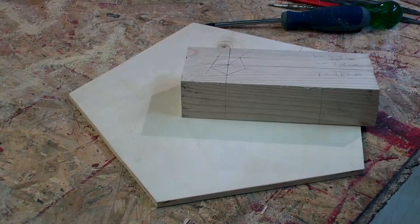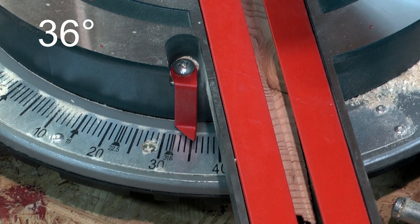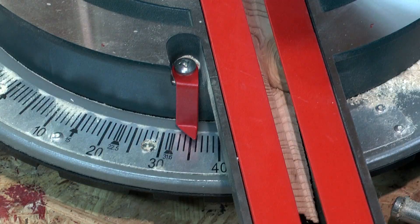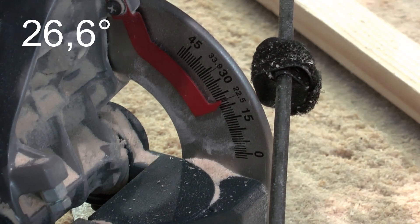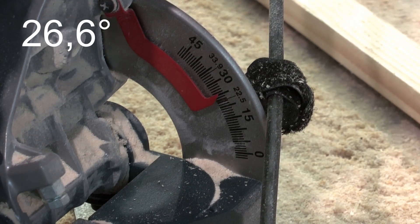The angles we need on the mitre saw are 180 degrees minus 144 degrees, and 116.6 degrees minus 90 degrees.